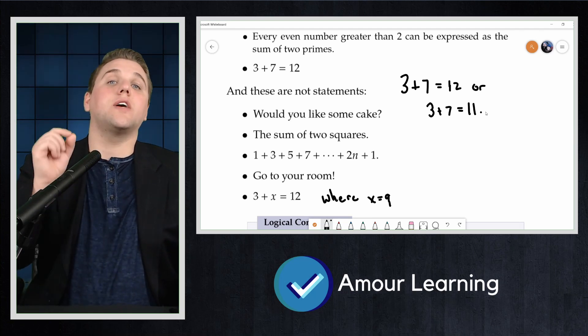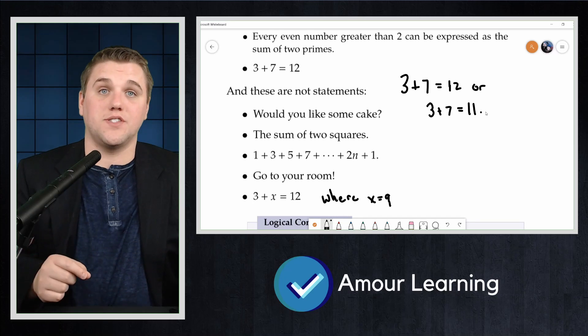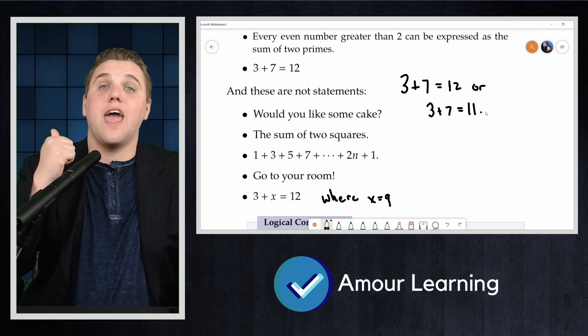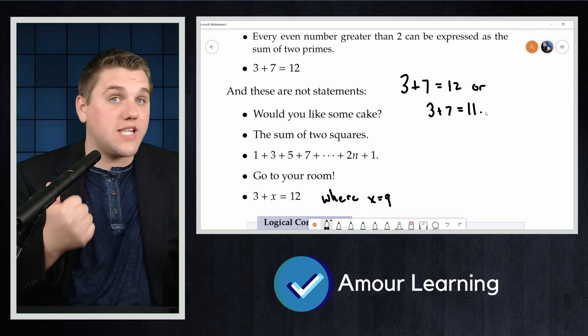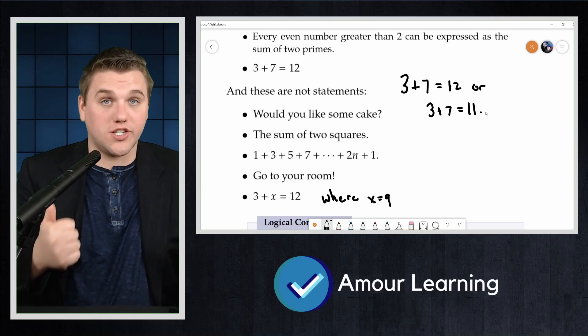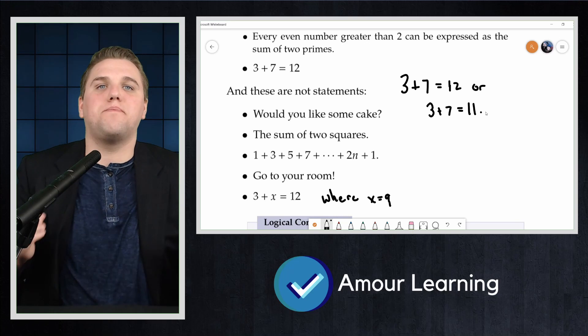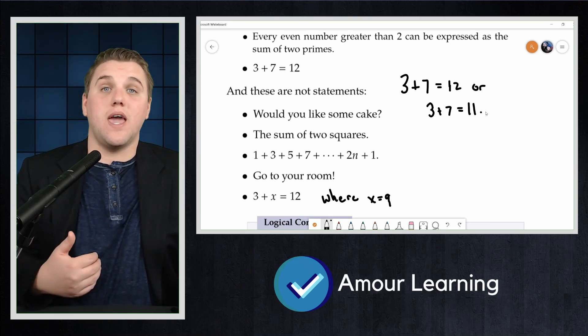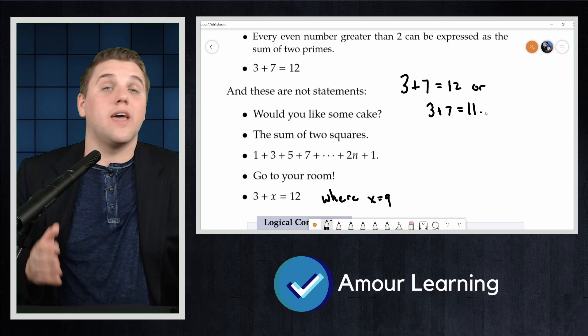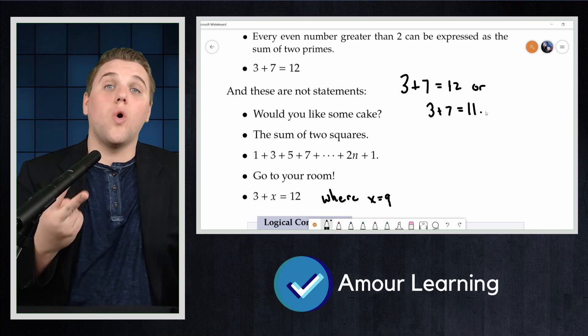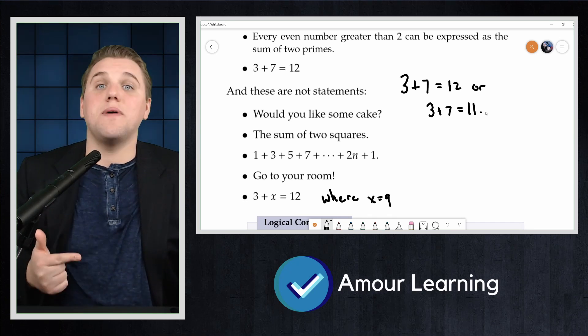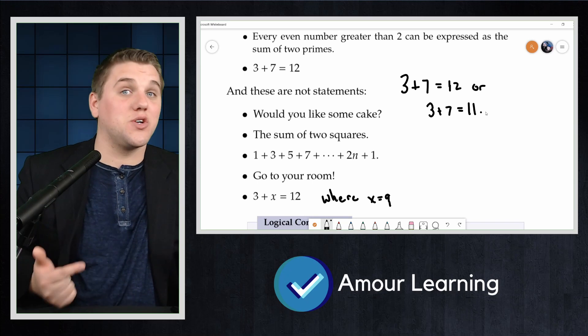In this course, we will consider five connectives. The first one is the connective AND. Sam is a man AND Chris is a woman. The AND is used to combine two atomic statements to make a molecular statement. The second connective is OR. Sam is a man OR Chris is a woman.